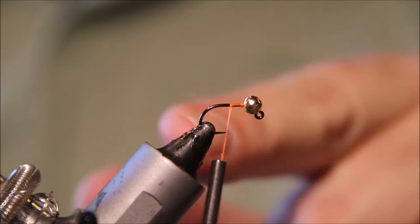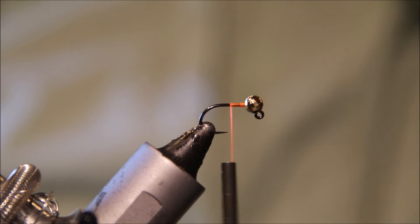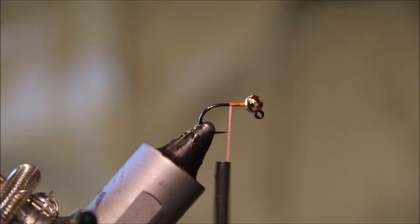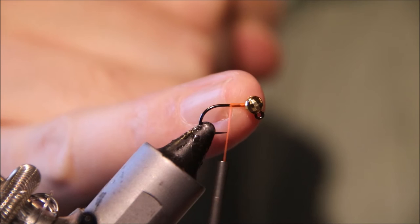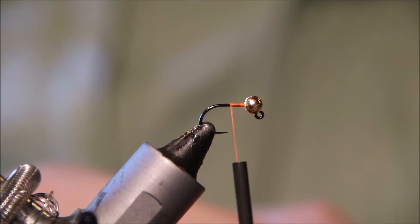I've got a size 14 jig hook in the vise there, and I've got a 3.5mm tungsten bead, which you might think is a bit oversized, but the fish don't mind, and I would also tie this with a couple of smaller beads.